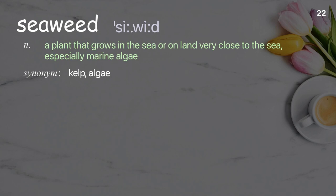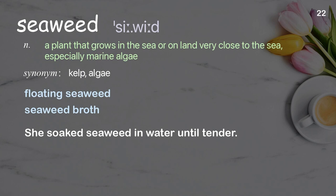Seaweed: a plant that grows in the sea or on land very close to the sea, especially marine algae. Examples: floating seaweed, seaweed broth. She soaked seaweed in water until tender.